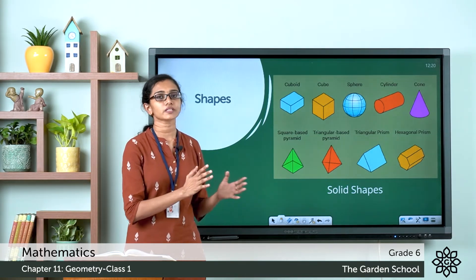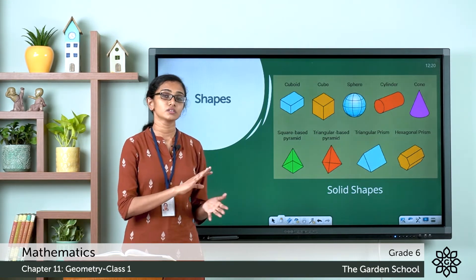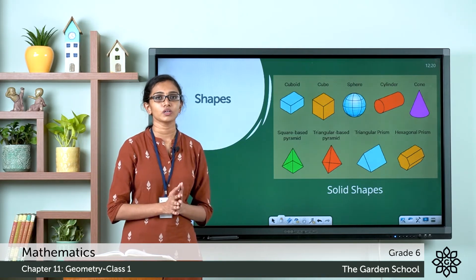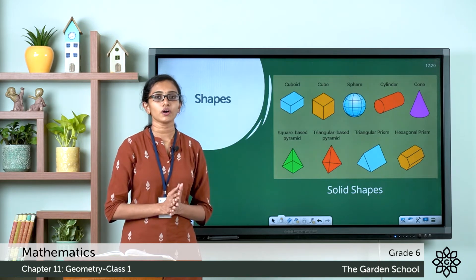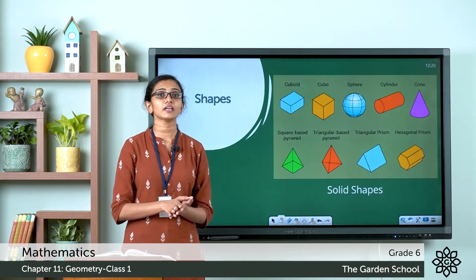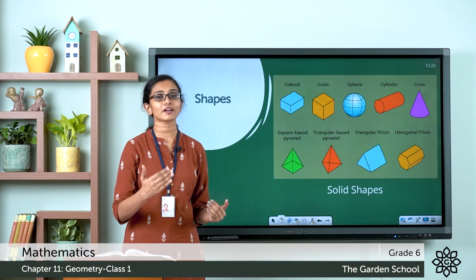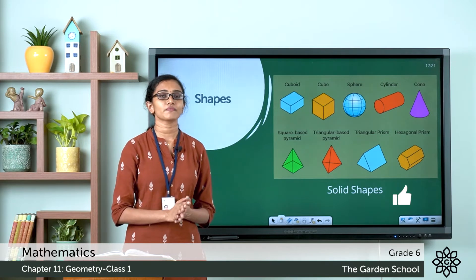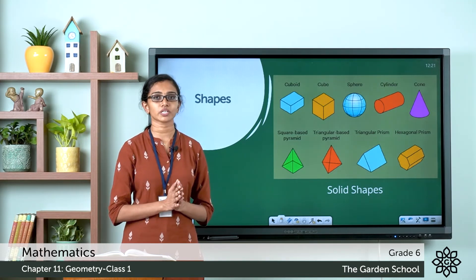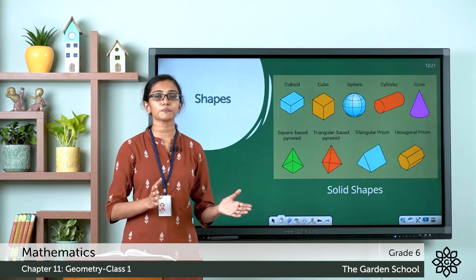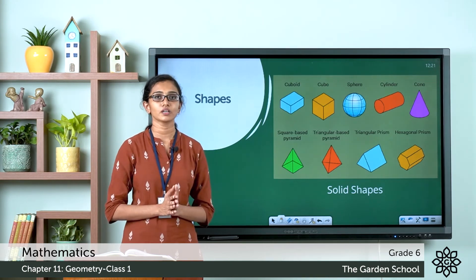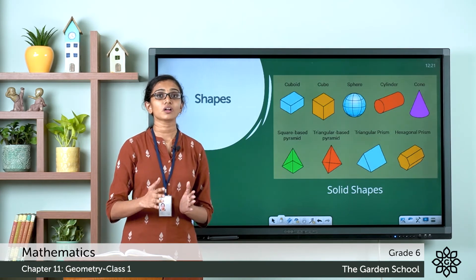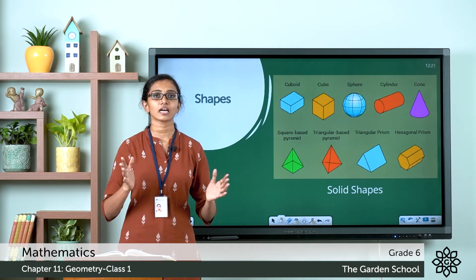How can we draw these solid shapes? Similar to two-dimensional shapes, you can start with different points in a plane, join these dots using lines or line segments, and then you have to move or rotate that plane to obtain the solid shapes. This makes them different from plane shapes or 2D shapes. In all these cases, you start with a point or different points, join them with lines or line segments, and then move or rotate this plane to get different shapes.